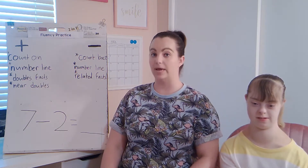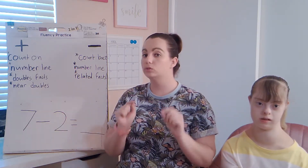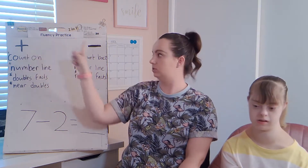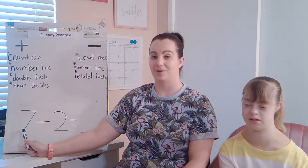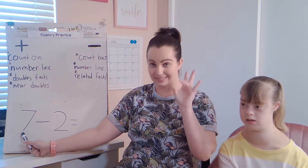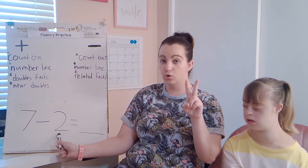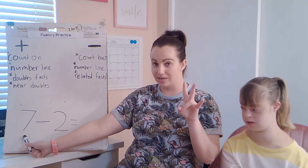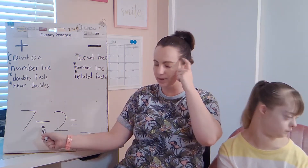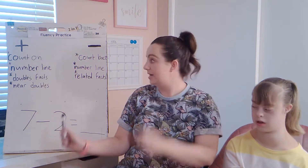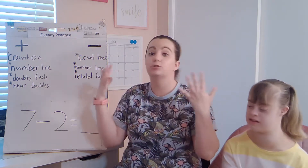Here's our next problem. Let's read it carefully, because in fluency practice, or any time we're doing math, we always want to make sure we're very careful about whether we're doing addition or subtraction. Ready, set, read with me: seven — take away, that's subtraction — take away two equals. Seven take away two equals. I'm seeing the take away sign so I have to do subtraction. I could count back, I could do a number line, maybe related facts. I think this time I'm going to try a number line.